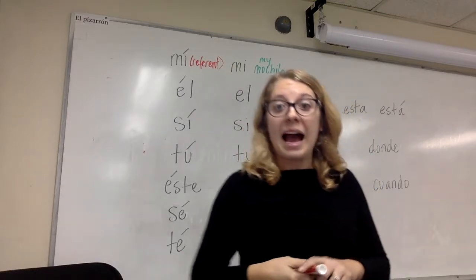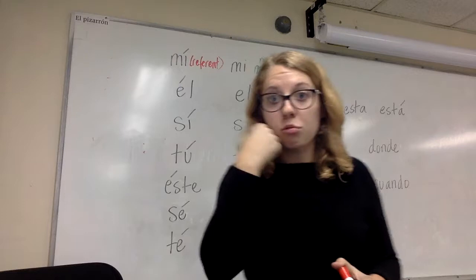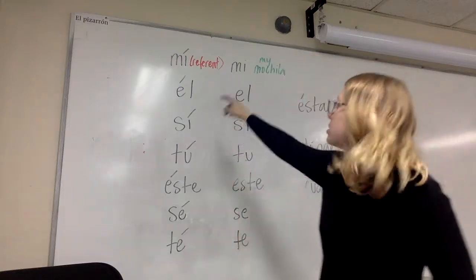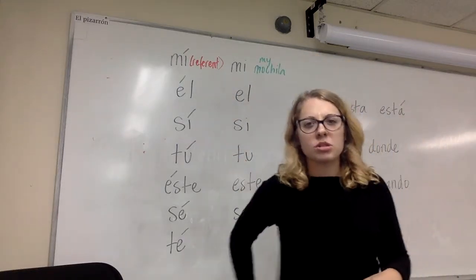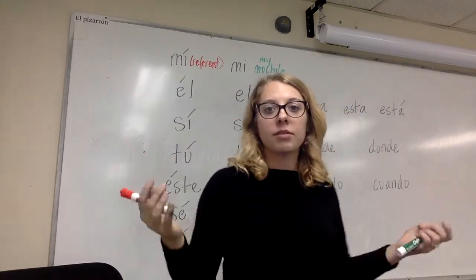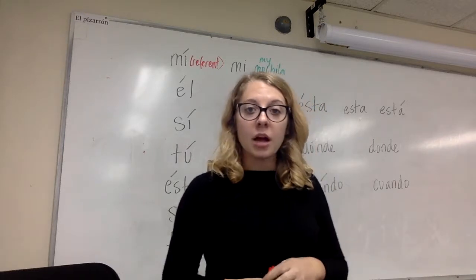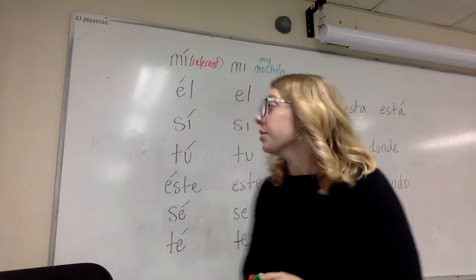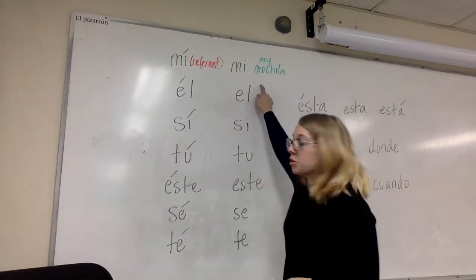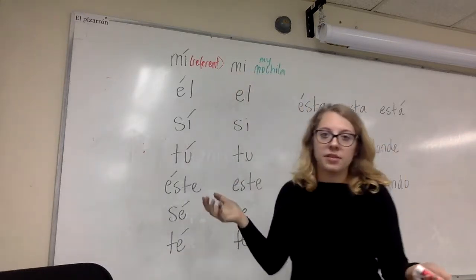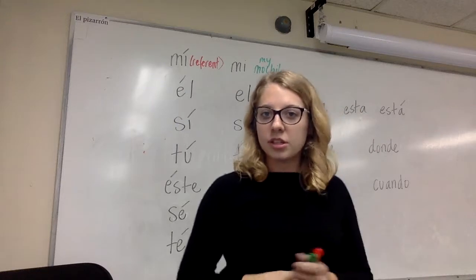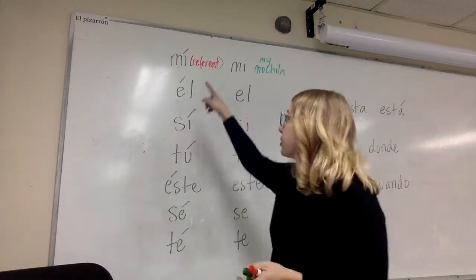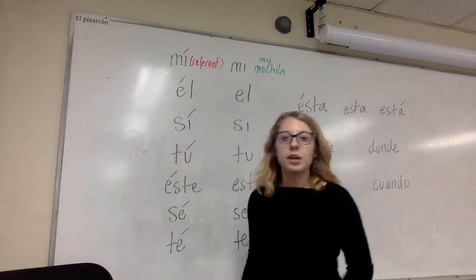'Para mí,' 'a mí,' 'me gusta' — this is a referent referring to myself, usually used in the context of an indirect object, whereas 'mi' without an accent is used as a possessive adjective. So that accent really just tells me the difference in its use.